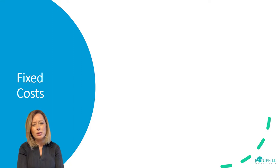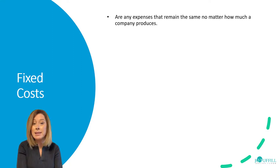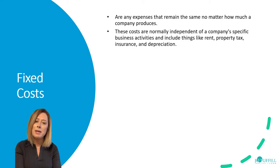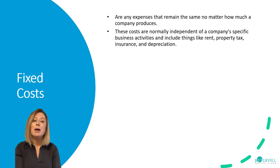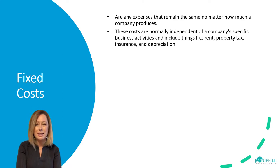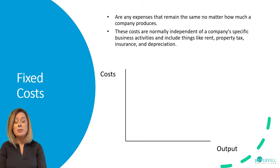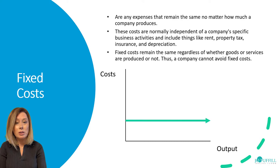Fixed costs are expenses that remain the same no matter how much the company produces — they are actually independent of business activity. It's things like rent, property tax, insurance, and depreciation. If we were to graph it, the fixed costs will remain the same regardless.